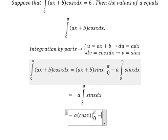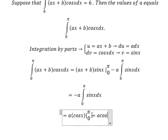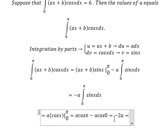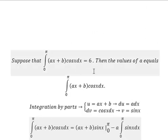So we get negative a cosπ minus negative a cos0, which equals negative 2a. And we know that the value of this integral equals 6.